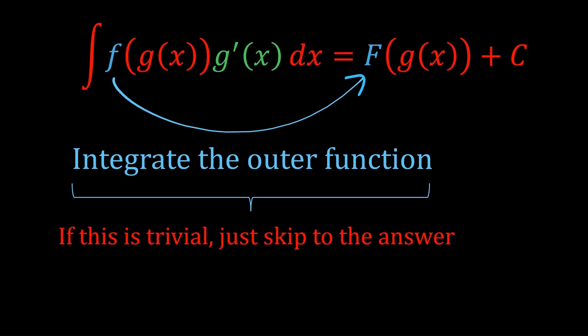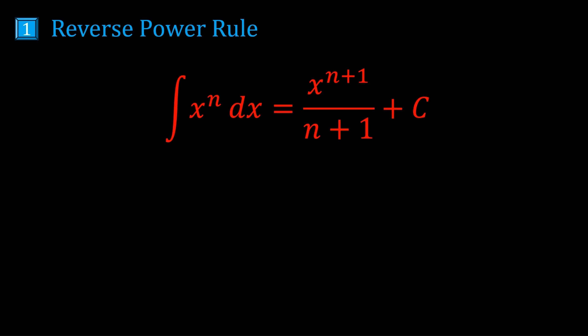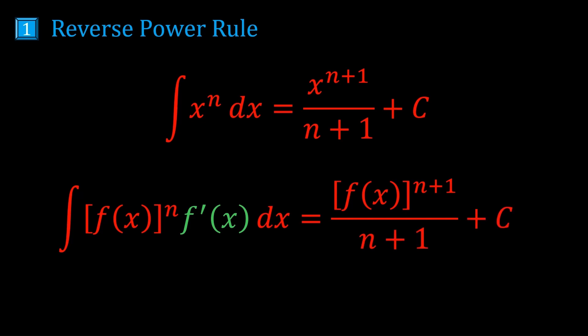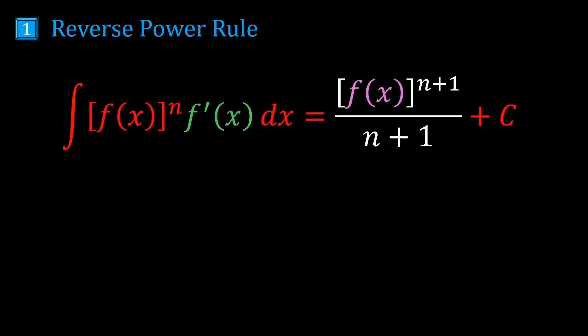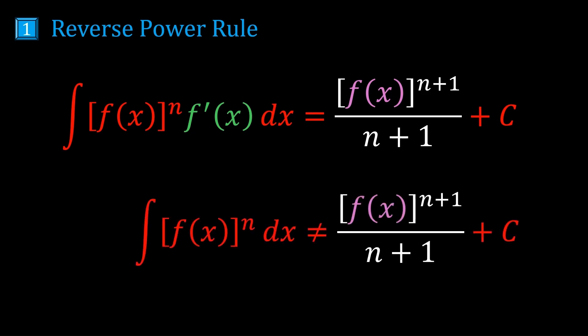Let's look at some examples of outer functions which are standard integrals. First, we have power functions using the reverse power rule. The integral of x to the n is x to the n+1 divided by n+1 — you just add 1 to the power and divide by the new power, where n is any constant not equal to minus 1. You can use this same idea to find the integral of any function to the n times the derivative of that function — it will just be f to the n+1 on n+1. But be careful: the integral of f(x) to the n is NOT f(x) to the n+1 on n+1, because differentiating the right-hand side gives an f'(x) via the chain rule, which isn't present on the left.